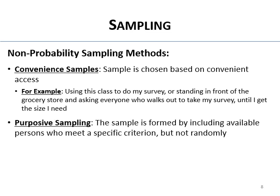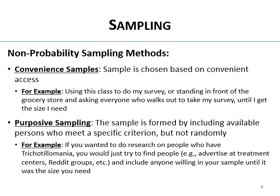Purposive sampling is when you want to study a particular subgroup and you form your sample by including any available people you can find who meet your specific criteria — but not randomly, you're just trying to enroll people. For example, if you want to do research on trichotillomania, you advertise at treatment centers, Reddit groups, Facebook, etc., and anyone willing to complete your questionnaire is in your sample. Purposive sampling differs from convenience sampling in that participants must meet specific criteria.